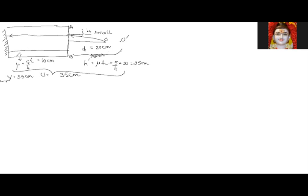From the silver surface, the image A′B′ is formed. The image distance from the silvered surface is 35 centimeters.